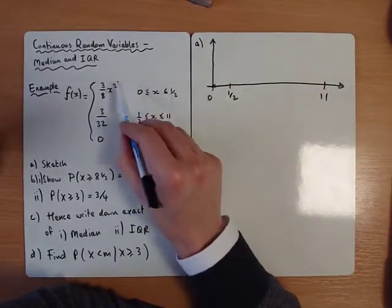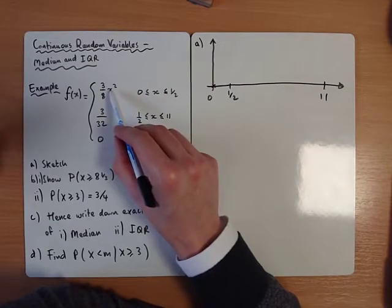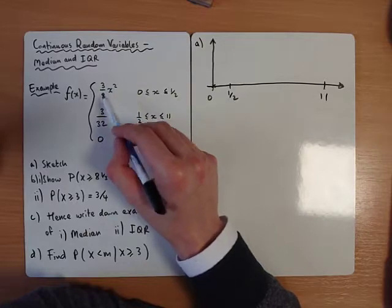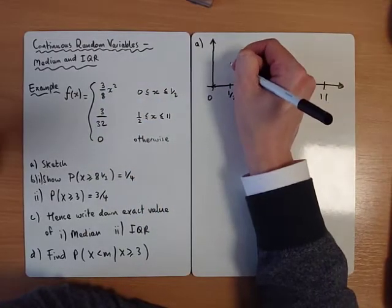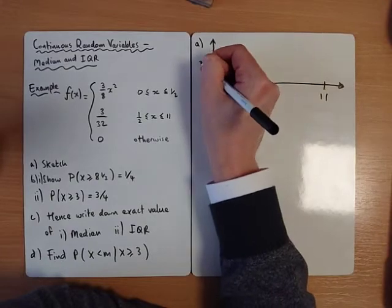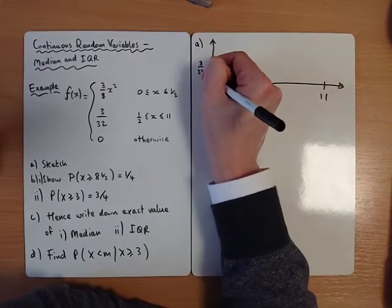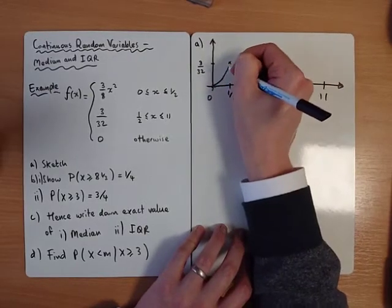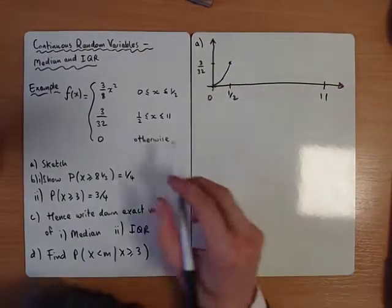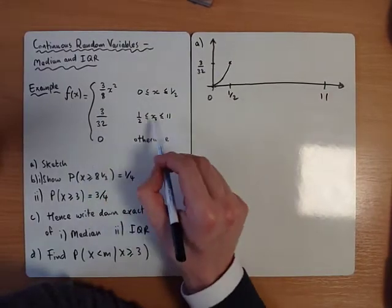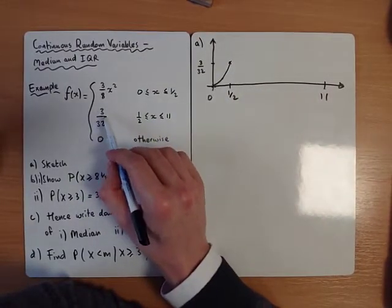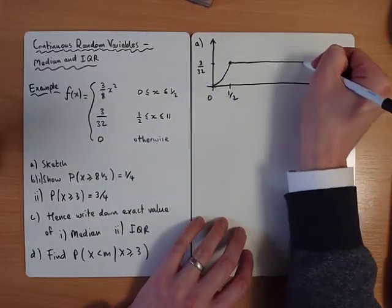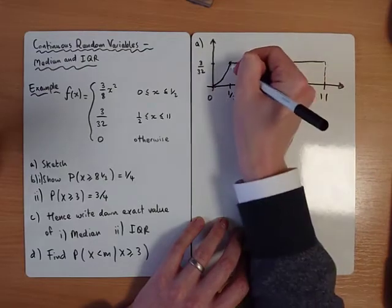If I sub a half in I get a half squared which is a quarter, so that would give me 3 over 8 times by 1 over 4, which would give me 3 over 32. So we've got a curve here, but then for the rest of the function it's just telling me it's a constant. The function is always 3 over 32, so it should look like this.